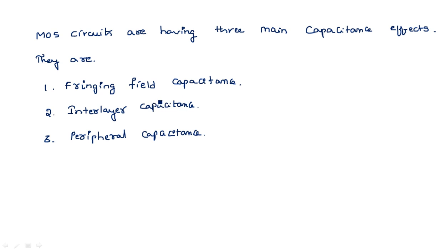Fringing field capacitance is the capacitance that exists at the edge of any particular MOSFET layer. Interlayer capacitance is the capacitance between two different layers — for example, one metal wire and one polysilicon wire going parallel, with some capacitance existing between them. Peripheral capacitance, also known as diffusion capacitance, exists between n-type and p-type diffusion regions, separated by a depletion layer.